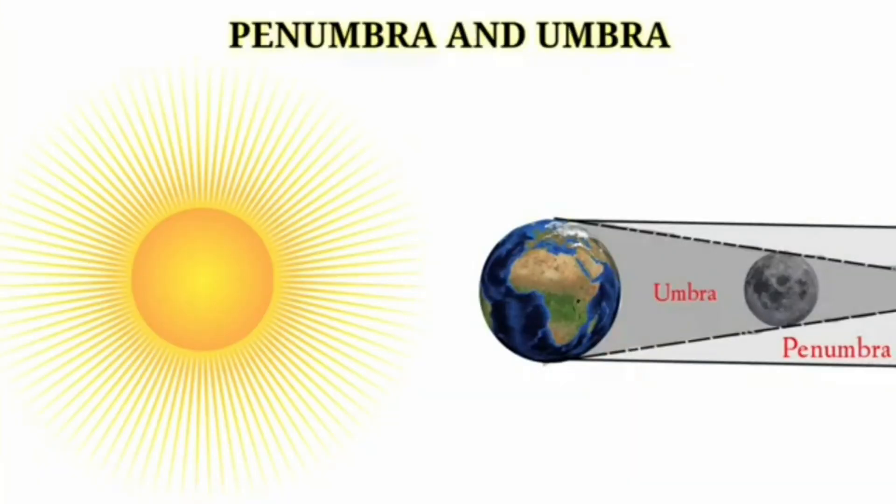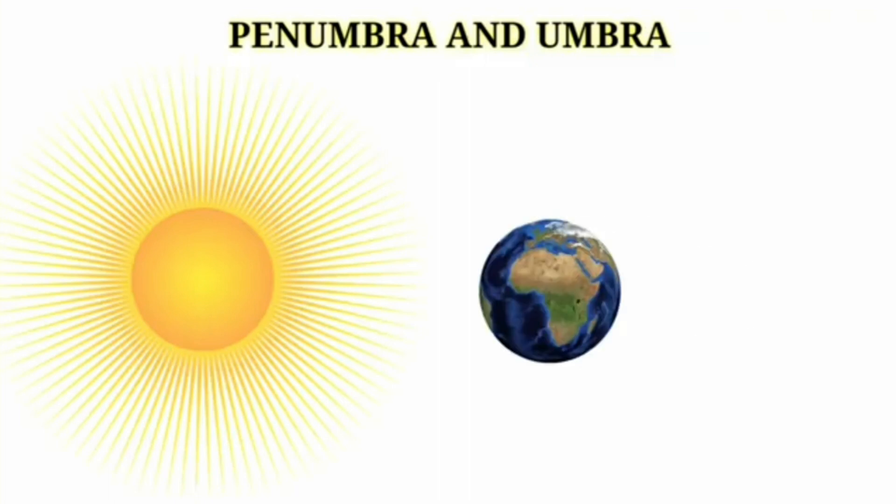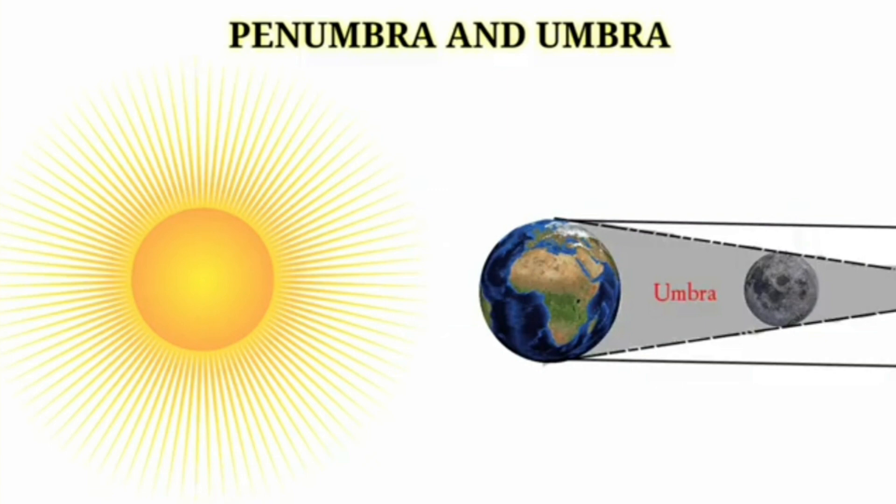Also, let me tell you there are two shadows that occur in the Lunar Eclipse: Penumbra and Umbra. Umbra is the innermost and darkest part of the shadow, where the light source is completely blocked by the Earth. And Penumbra is the region where only a portion of the light source is obscured by the Earth.